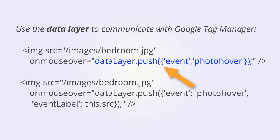Now, this event is not the Google Analytics event — it's going to serve as the trigger for the Google Analytics event tag in Google Tag Manager, the same way that GTM link click served as the trigger. But we are also going to push another piece of data into the data layer. We can distinguish between hovers over different images by dynamically passing the image source into the data layer for use as the label parameter for the Google Analytics event tag.